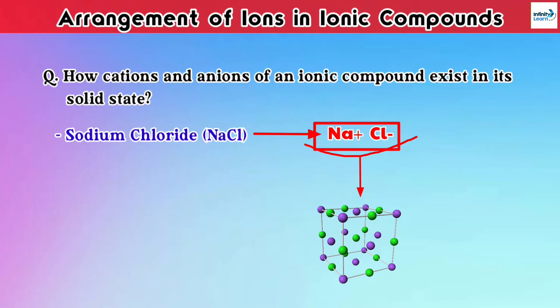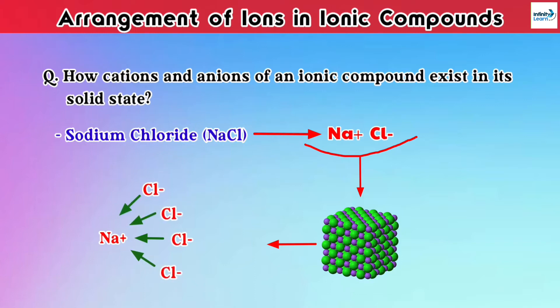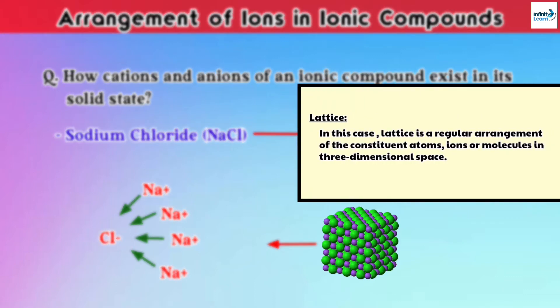That's why, due to a uniform electric field, each ion is attached to a large number of other ions. For example, in this case, one Na+ will not attract only one Cl- ion — it can attract as many negative ions as it can. Similarly, the Cl- ion will also attract several Na+, so as a result, it will be a regular arrangement of ions, which is known as a lattice.